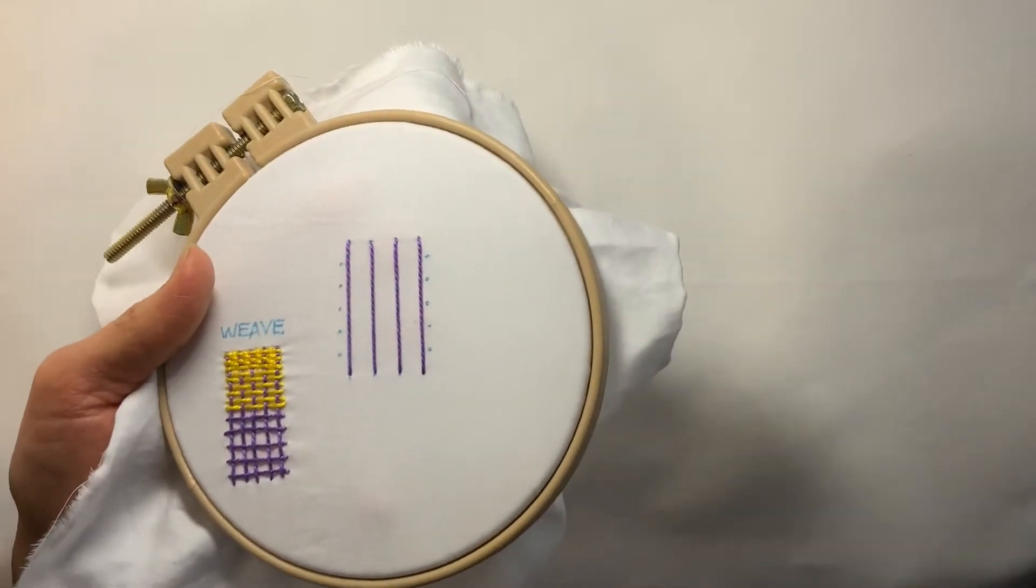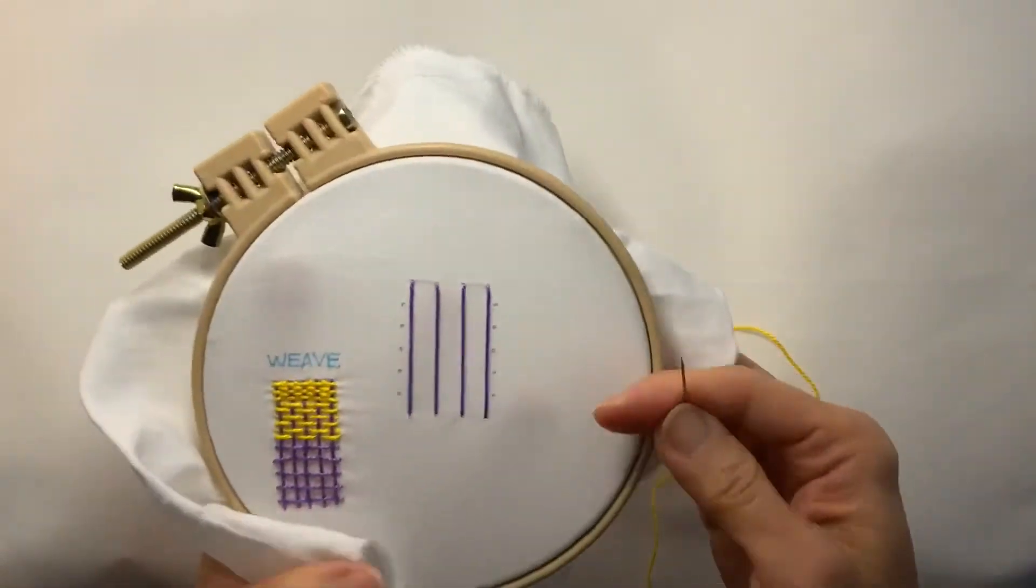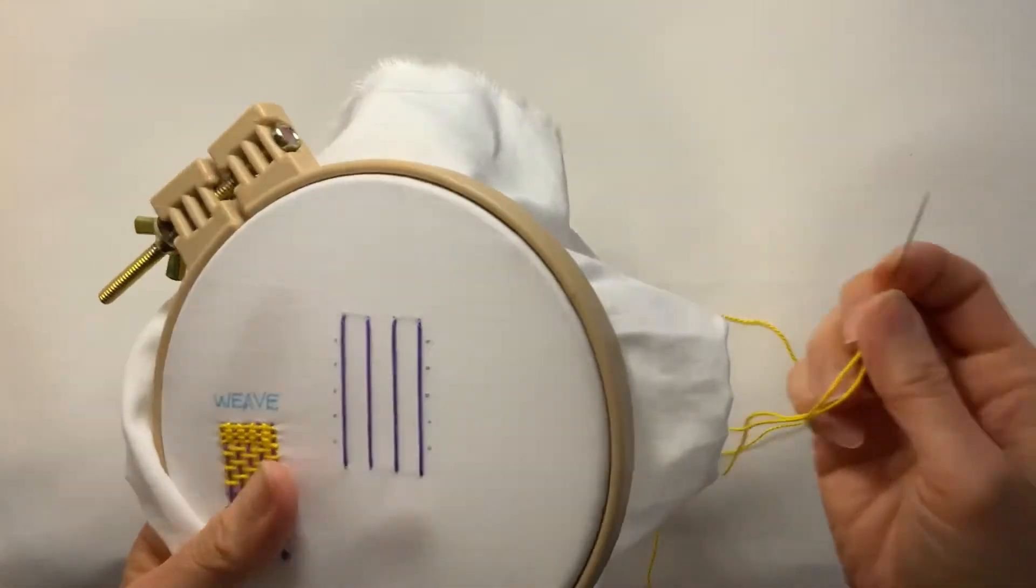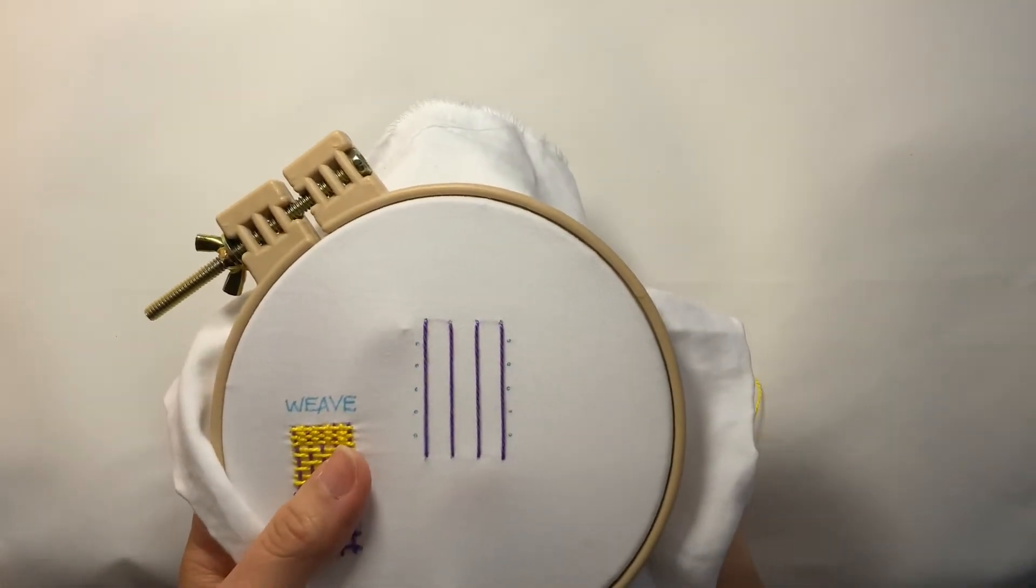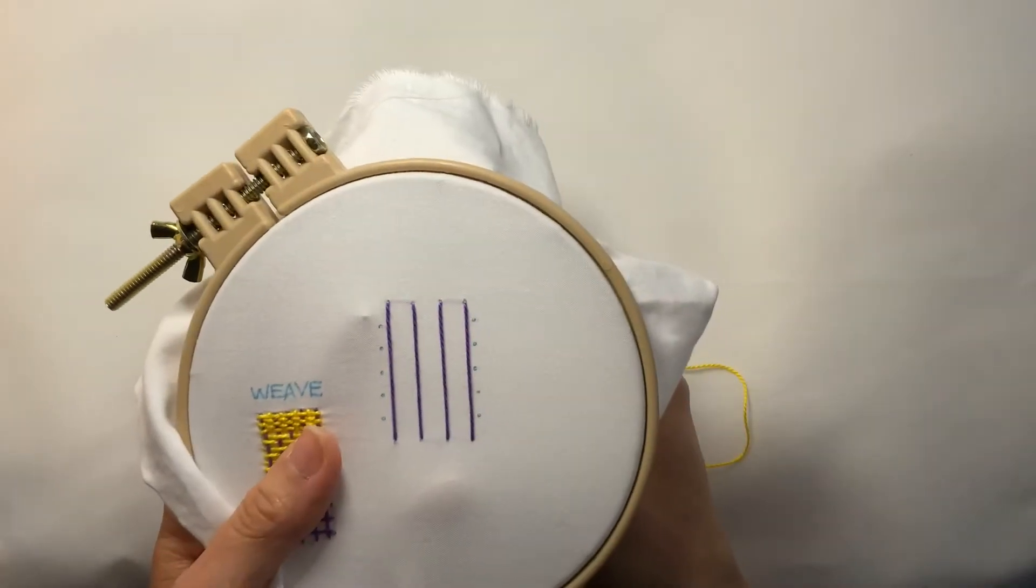So now I'm going to switch over to my yellow and start weaving. And you can weave top to bottom, bottom to top, whatever you feel like, whatever is comfortable for you. I'm going to start at the top here. And I just made these little dots as guides for me.